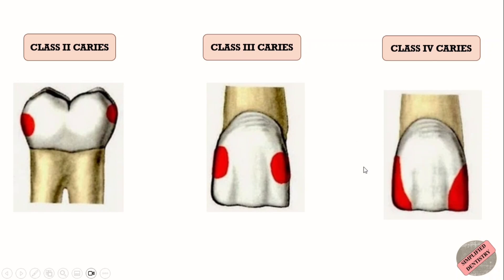The difference between Class 3 and Class 4 is that Class 3 does not involve the incisal angles, whereas Class 4 involves the incisal angles — that is, the incisal edges of the teeth. Either one or both incisal edges can be included.